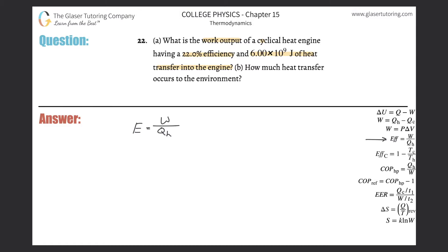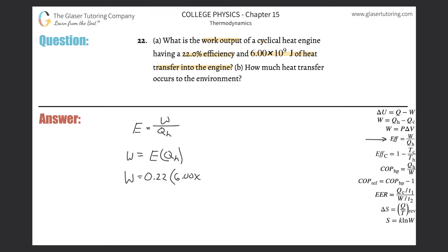They tell us the amount of heat — it's 6 times 10 to the 9th. They tell us the efficiency, so we can easily solve for the work output. This is just equal to the efficiency value multiplied by Q sub H. Remember, when you plug in, make sure you plug in the decimal form: 0.22 for the efficiency, multiplied by 6.00 times 10 to the 9th.